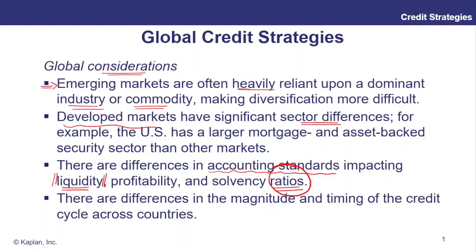The same goes for profitability — when thinking about return on equity, operating return on assets, that sort of thing — and solvency, overall debt levels versus equity or versus assets. You would also be thinking about whether an entity has more ability to keep assets and liabilities off their books in order to make them look less geared than they actually are, and this varies across different jurisdictions.